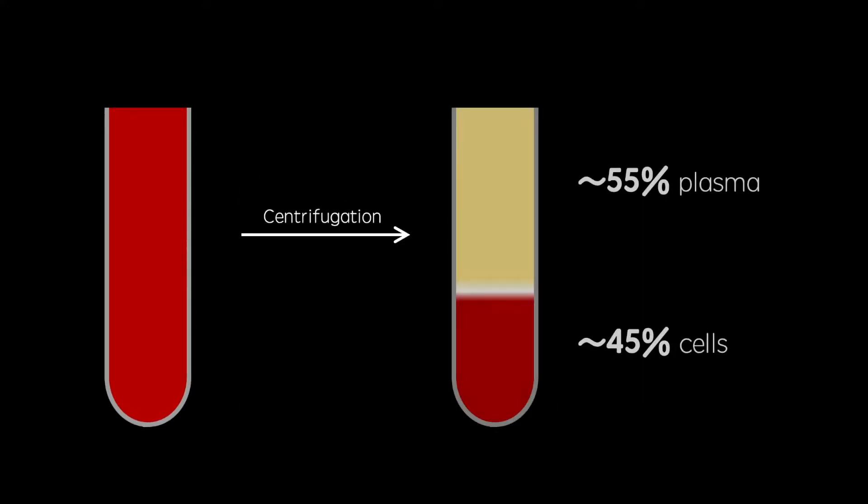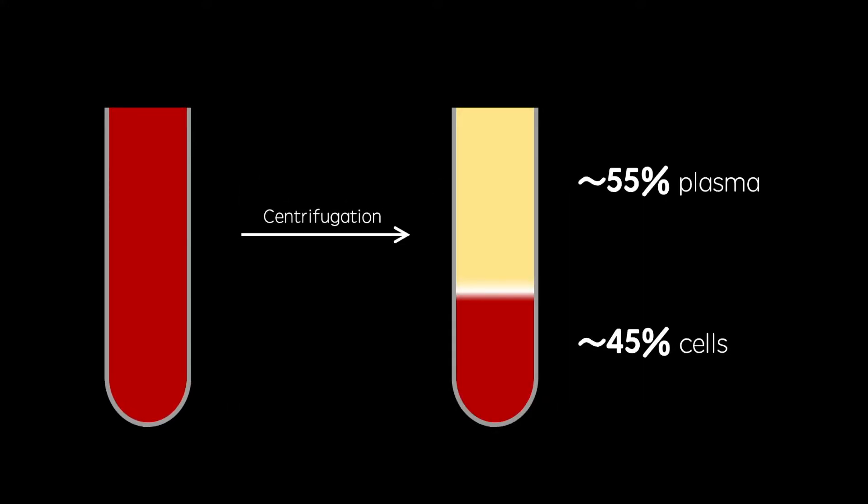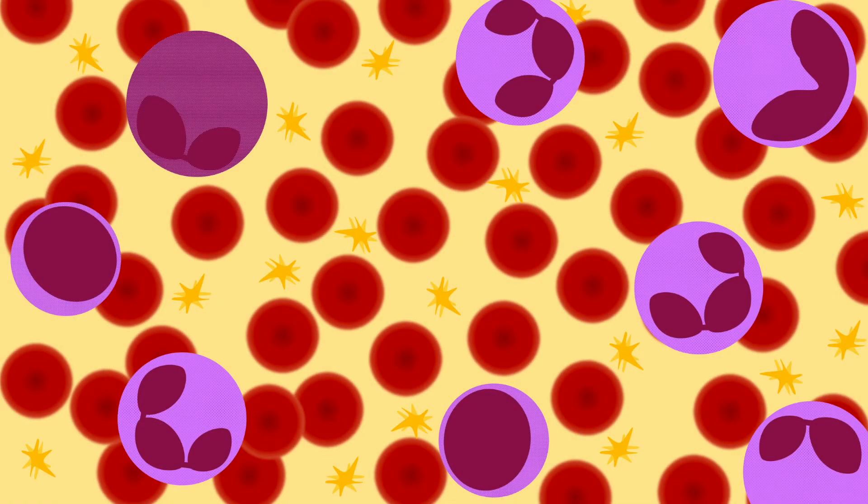In this video, I'm going to discuss the components of blood. Blood is made up of around 55% plasma, which consists of extracellular fluid and blood-specific proteins such as albumin and clotting factors, and around 45% blood cells, which includes red blood cells, white blood cells and platelets.